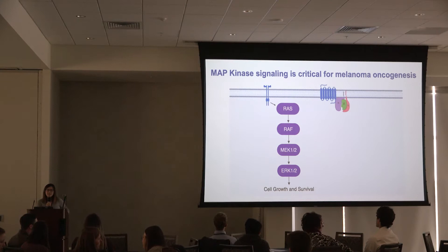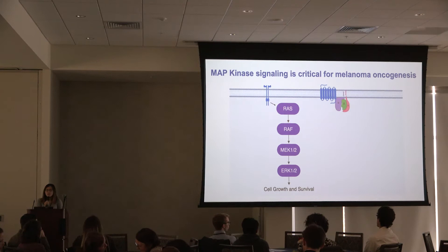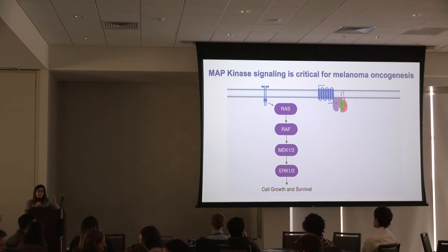Melanoma is a malignancy of melanocytes, which are pigment-producing cells. The MAP kinase pathway, which consists of RAS, RAF, MEK, and ERK, is a crucial signaling node for cell proliferation and survival.